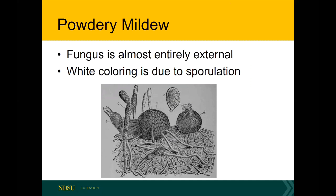What you're actually seeing when you see that white powdery growth: the fungus is almost entirely external, and the white coloring is mostly due to sporulation and somewhat to hyphae. Looking at a textbook photo, there are three different things you can see. First, general mycelia — the network of threads. Second, the conidia — both clear and darkened spike-like structures — which are the primary method the fungus spreads throughout the year. Third, the cleistothecia — meatball-looking structures that are the overwintering structures, occurring later in summer or early fall.